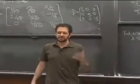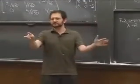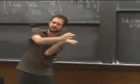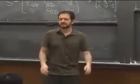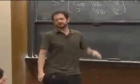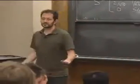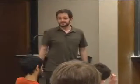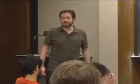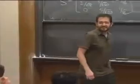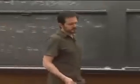A question was raised: couldn't an eigenvector be (1, 1, −1) instead? Yes — there's no unique choice. Any S whose first two columns form an orthonormal basis for the λ = 3 eigenspace works. Given a two-dimensional space, there are infinitely many orthonormal bases — you just rotate them.